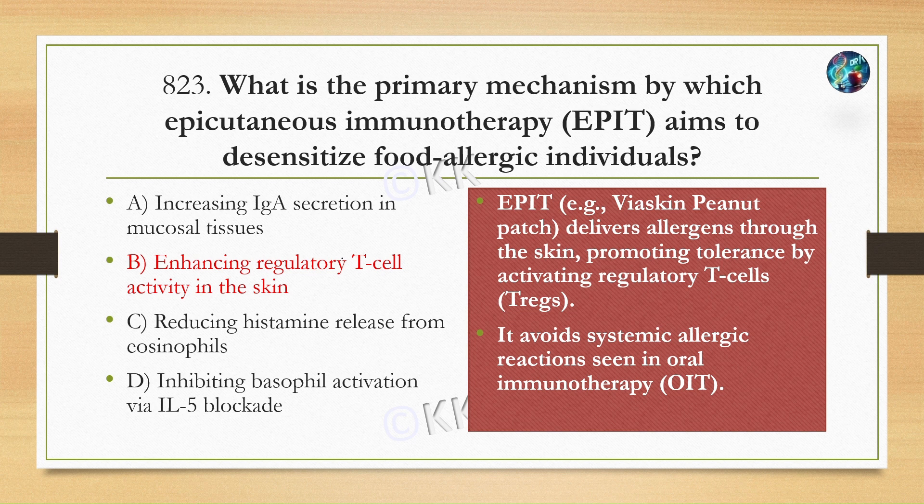यह जो epicutaneous immunotherapy होता है, such as Viaskin peanut patches, यह basically deliver करता है allergens को through skin, which promotes tolerance by activating regulatory T-cells. यह generally systemic allergies को avoid करने के लिए use किया जाता है, which is commonly seen in oral immunotherapy.